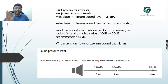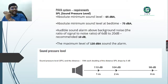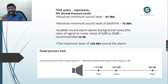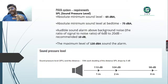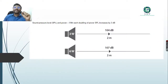We need to understand sound pressure levels and their relationship with distance. If we double the distance, the SPL drops by 6 dB. For example, a speaker producing 110 dB at 1 meter - if we increase the distance to 2 meters, the SPL drops by 6 dB to 104 dB. If we again increase from 2 meters to 4 meters, it drops another 6 dB to 98 dB.